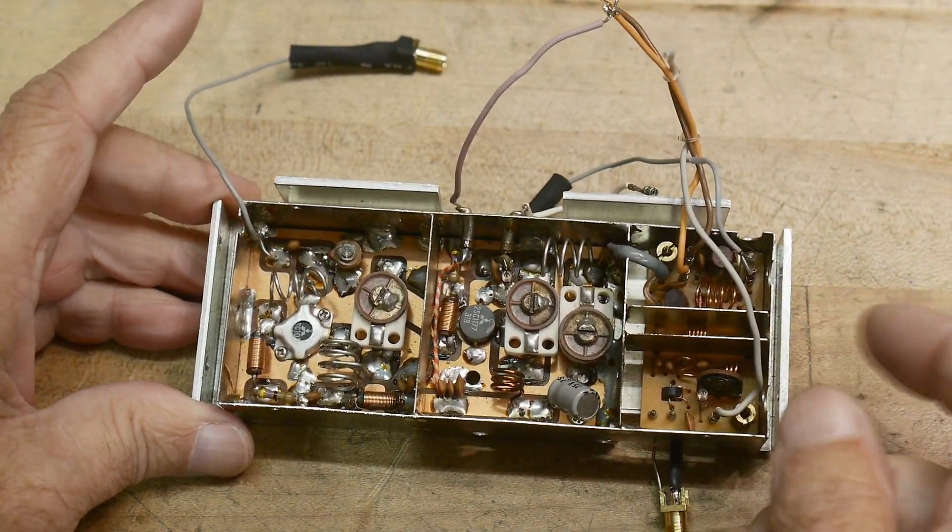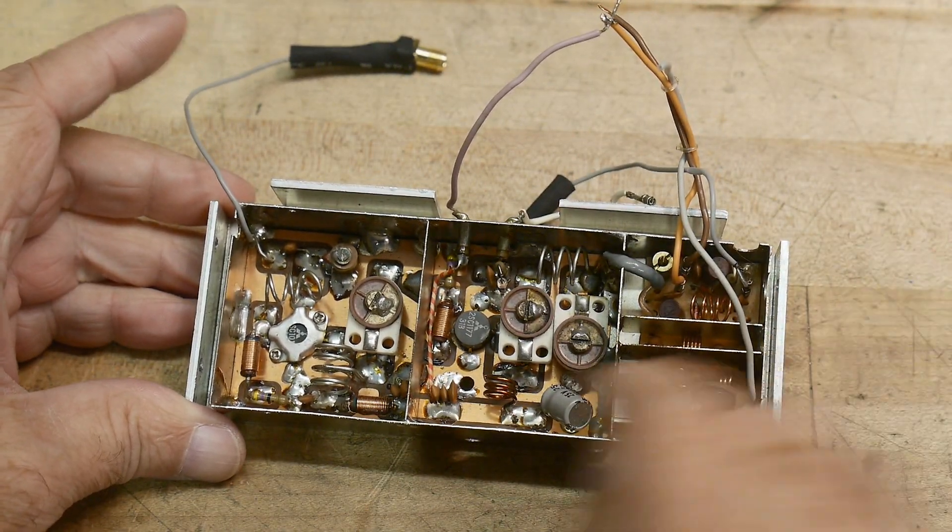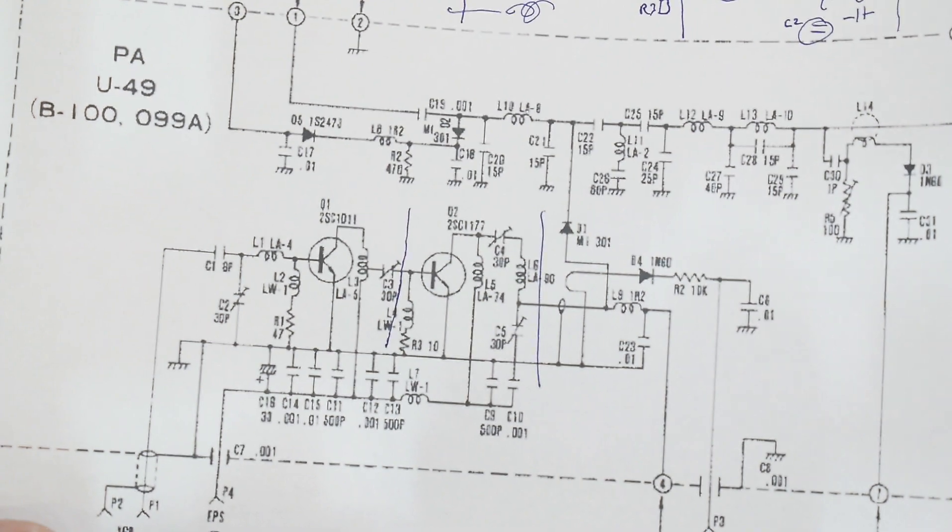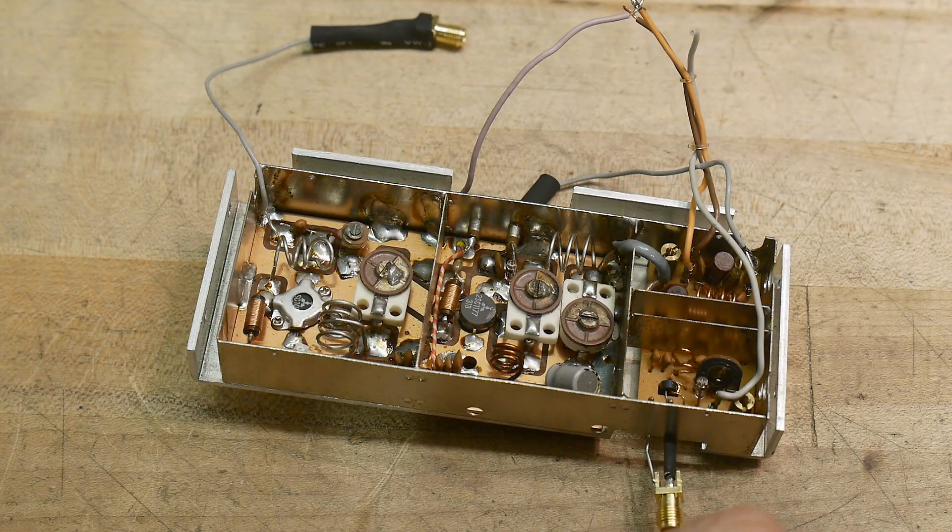All right, here's the power amplifier out of the IC230, and it looks like it's a self-contained unit. I've been busy looking at the schematic.